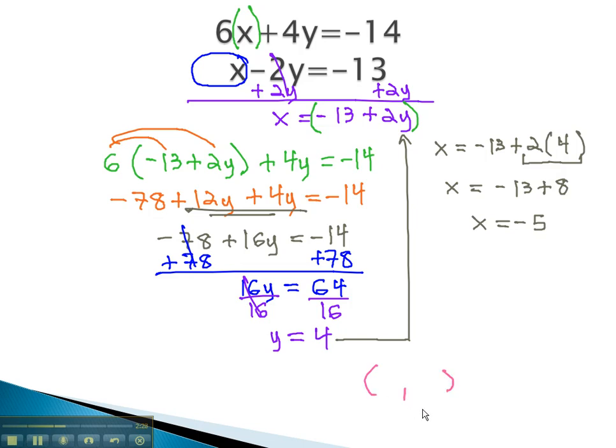As an ordered pair, x comma y, negative 5 comma 4 is the solution to our system of equations.